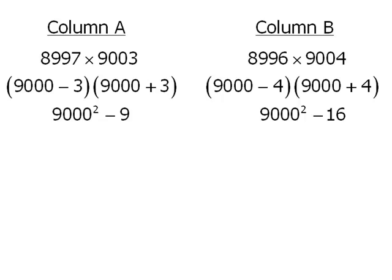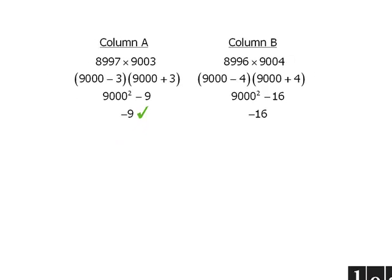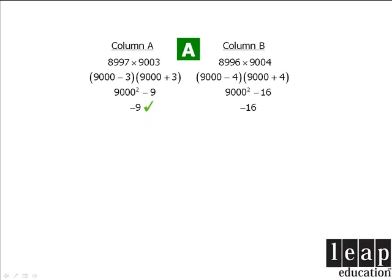From here we can subtract 9,000 squared from both columns, and now we can see that column A is greater than column B, which means our answer is A.